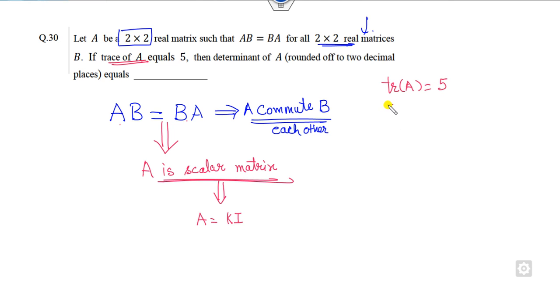That is over. Now what is given to you? Trace of A is equal to 5. So what is A? You can see A is equal to kI. That is a 2 × 2, so this is here. Now the trace is 2k is 5, k is 5 over 2. Now what they want? They want the determinant of A. What is that? Determinant of A is k square, 25 over 4. That is the right answer of this problem.